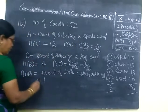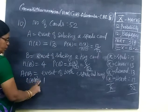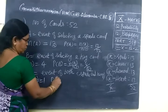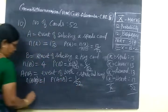So, you know, A intersection B, 1. Therefore, P of A intersection B, 1 by 52.